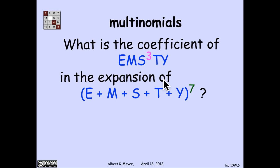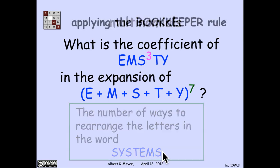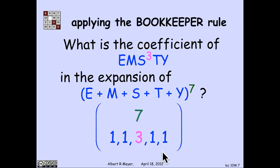In other words, the coefficient of e, m, s cubed, t, y in this product is the number of ways of rearranging the letters in this sequence of seven. It's the word systems, which is why we chose it to be rememberable. How many ways are there to rearrange the letters in the word systems? By the bookkeeper rule, there are seven choose 1, 1, 3, 1, 1.